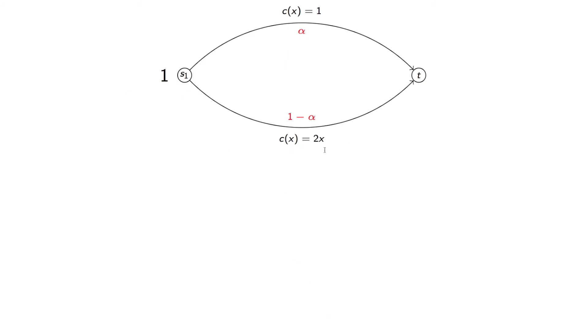Now if we aim to find the Nash flow for this — remember, it's simply that every used path must have the same latency — we find that f̃ = (0.5, 0.5) is a Nash flow.